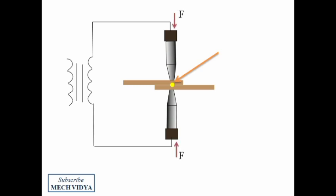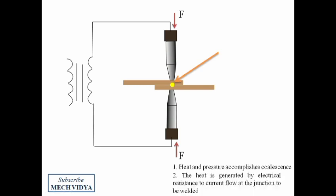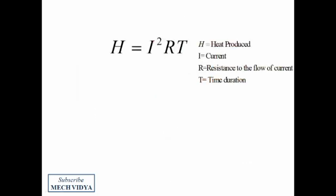The combination of pressure and heat makes the welding. Mathematically, we can write Joule's law as H = I²RT, where H is the amount of heat produced, I is the current, R is the resistance, and T is the time period for which this current is flowing.